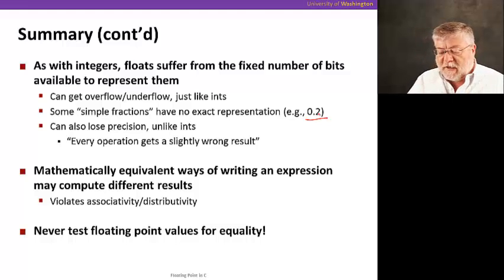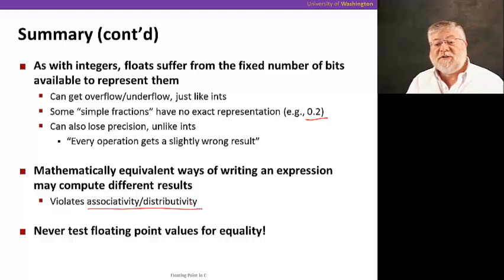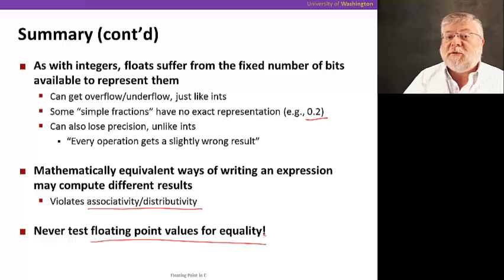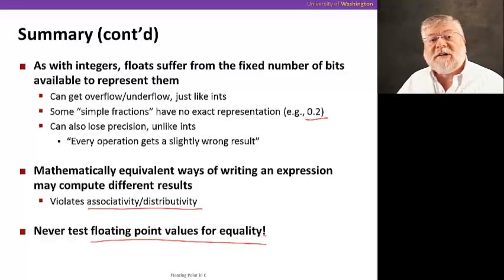The other thing we need to remember is that we might get different results as we apply associativity and distributivity. Those operations, those laws do not apply in floating point numbers because of these inexact results to every operation. And lastly, yet again, I want to remind you, never test floating point values for equality. Okay? That can get you in a lot of trouble because of these rounding effects. All right. That concludes our discussion of number representations. Thank you.